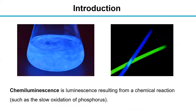Today we will learn chemiluminescence. Chemiluminescence is luminescence resulting from a chemical reaction, such as the slow oxidation of phosphorus.